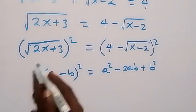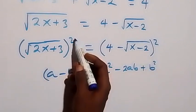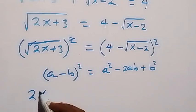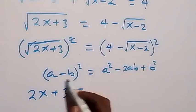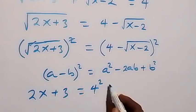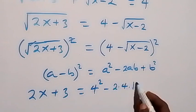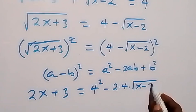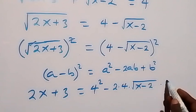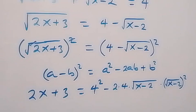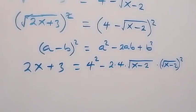This equation then becomes: the square cancels the square root, and we have 2x plus 3 on the left, which equals — following this pattern — 4 squared, minus 2 times 4 times square root of x minus 2, plus (square root of x minus 2) squared.